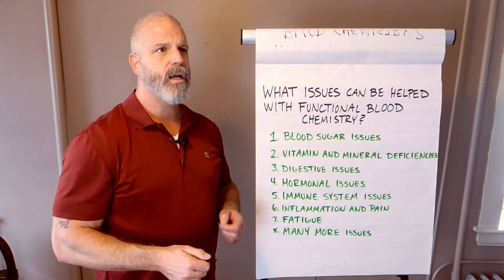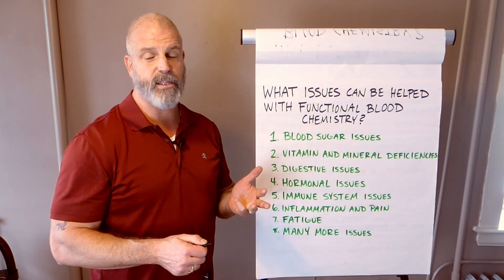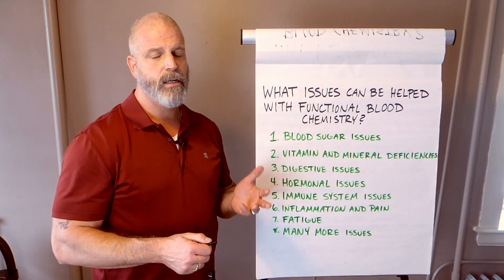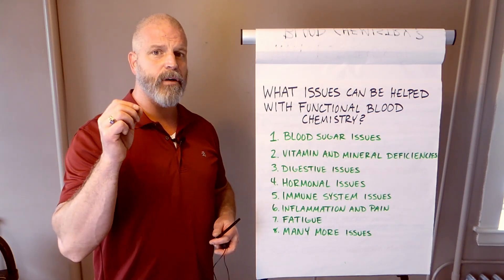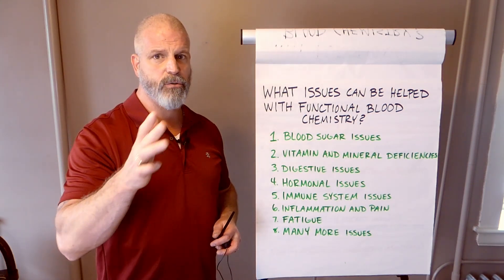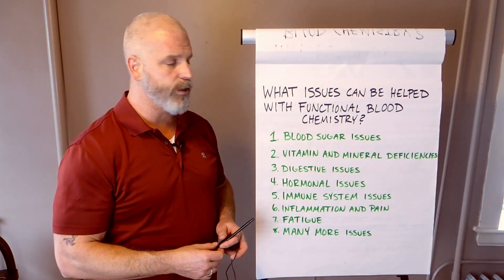calcium, magnesium, phosphorus, molybdenum—that's an uncommon one but you do see that—copper, iron, all these types of things. And you can assess whether you have good levels, too much, too little, and what you need to do about it. You can find that all with functional blood chemistry.